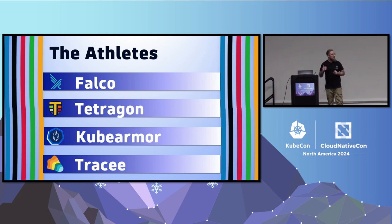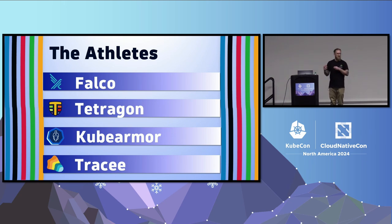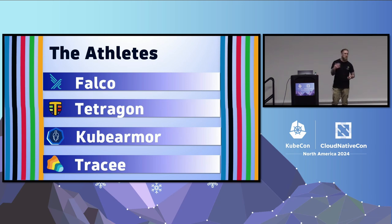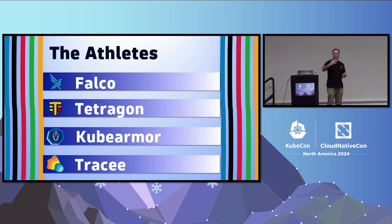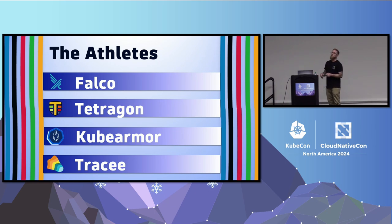The third competitor is KubeArmor — the Spartan, the new player of the market. It sees security from a different angle compared to the other competitors and is also trained through eBPF. Last, we have Tracy, coming from Aqua Security. They have done different open source projects — Tracy is one of them. You probably know another project they provided called Trivy Operator that does image scanning. So let's see how Tracy goes in this competition.